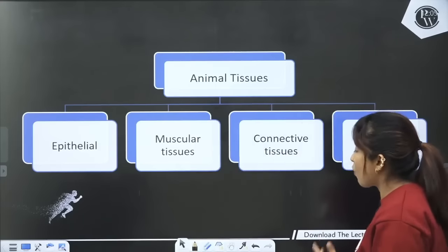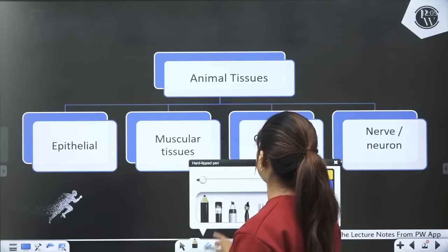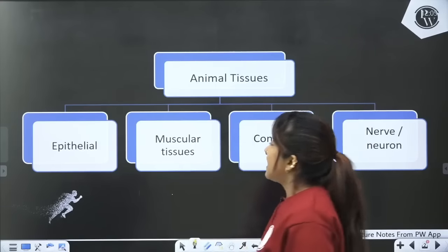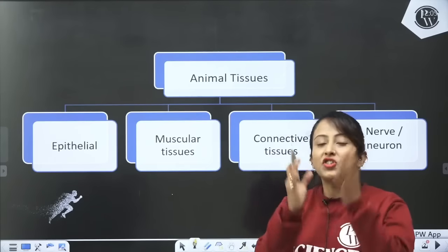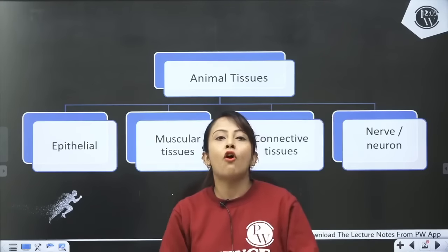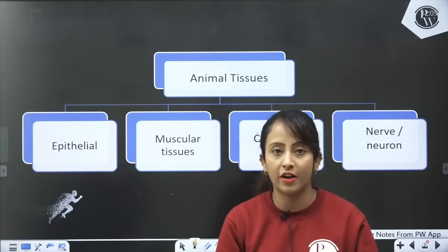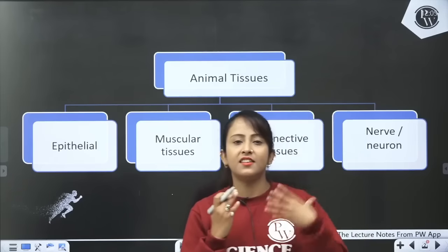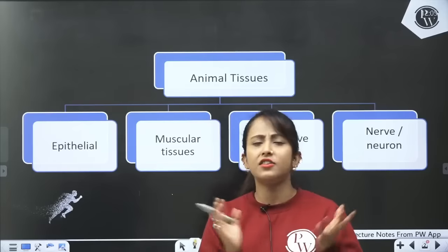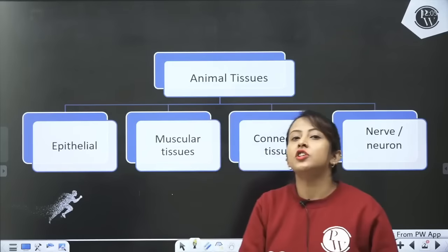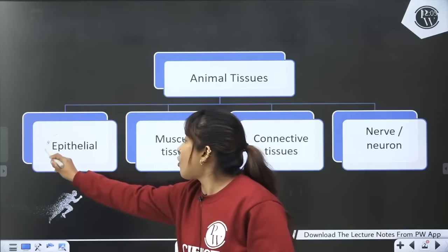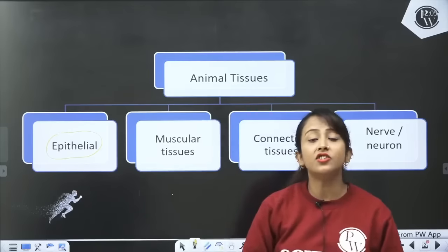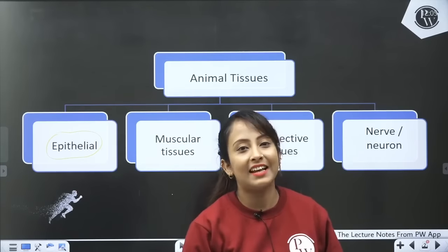To start with, if we see the overview of animal tissues — first of all, there are some tissues that form the lining of our body, like the skin. Muscles, bones, different tissues. So there are some tissues that form the lining of our body, and these tissues are called epithelial tissues.